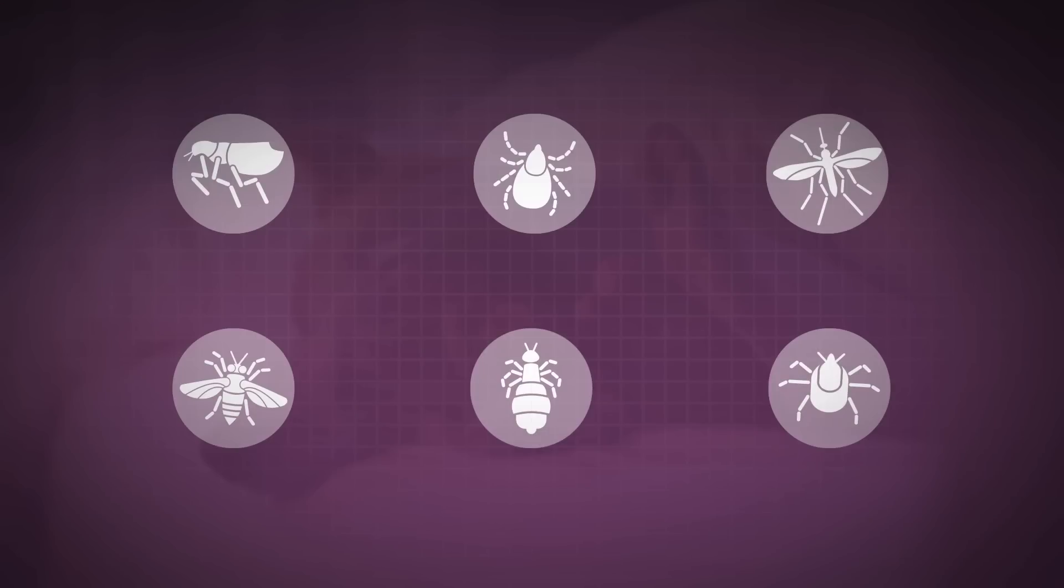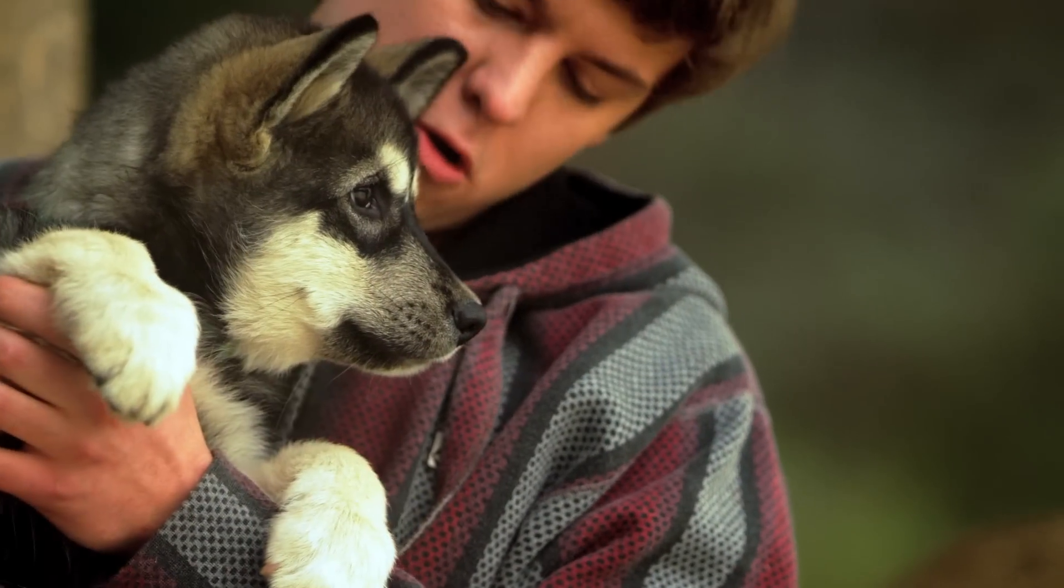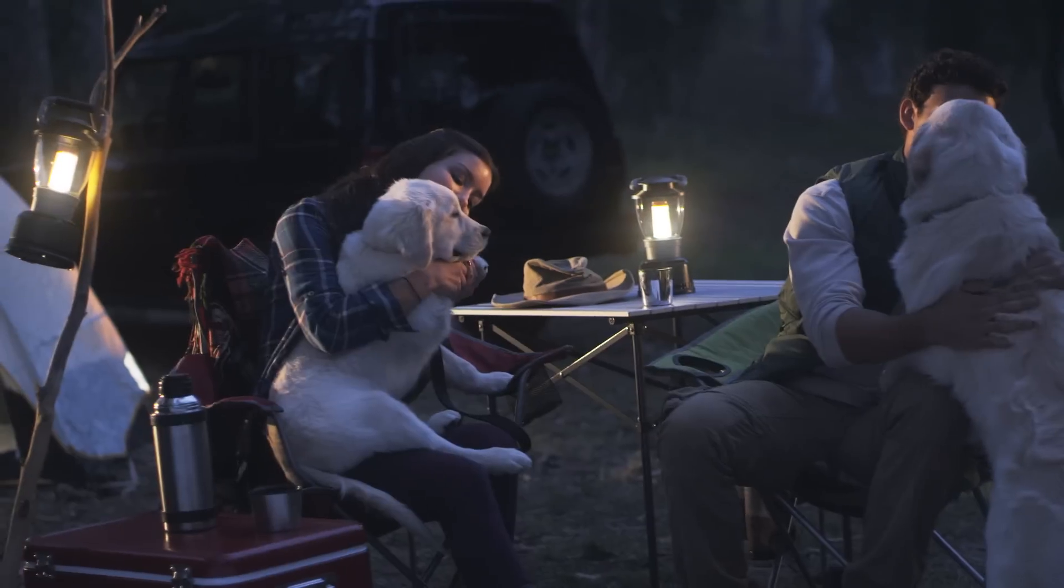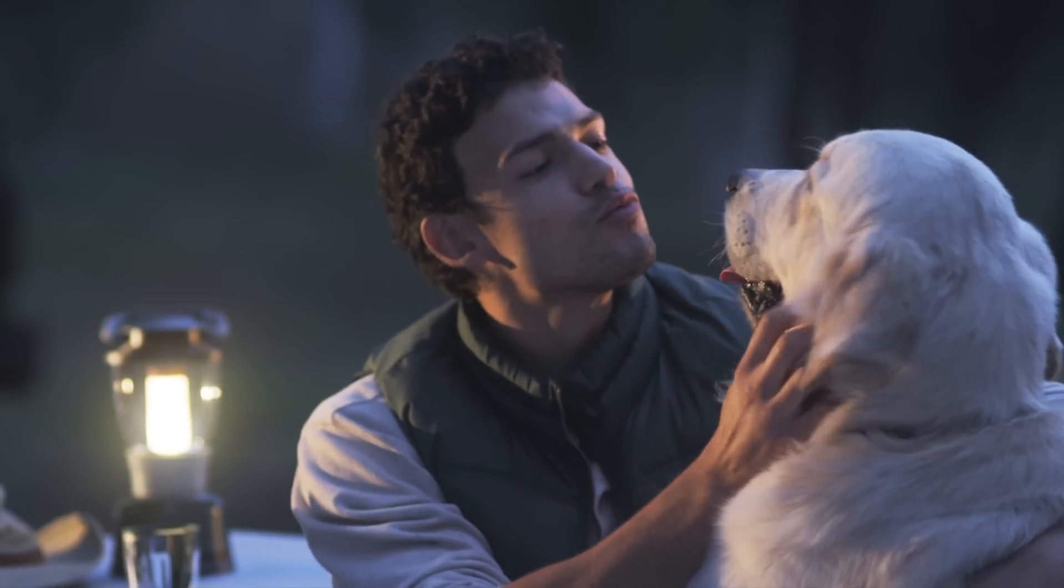Vector 3D provides broad spectrum control by repelling and killing the six major vectors that can harm your dog: fleas, ticks, mosquitoes, biting and sand flies, lice, and mites. With the repellent action of Vector 3D, parasites are stopped before they attach to or bite your dog. This can reduce the risk of parasites spreading disease.